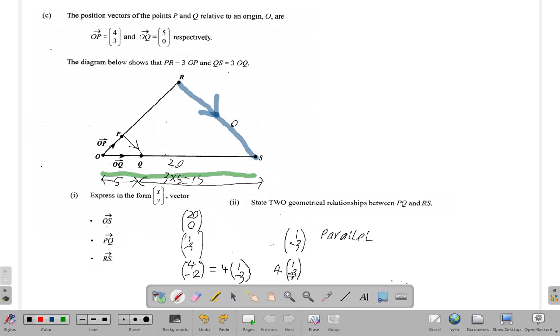The other thing is PQ is multiplied by 4, so the other one is that RS is 4 times longer than PQ. So RS equals 4PQ. You have: vector PQ is parallel to vector RS, and the other one is that vector RS is 4 vector PQ. So those are the two geometrical relationships.